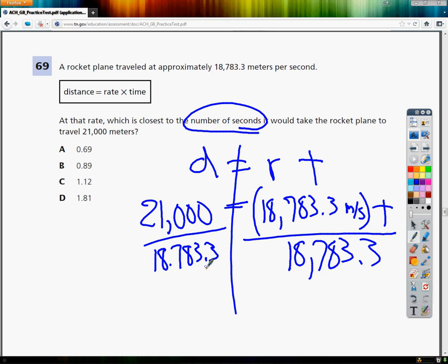21,000 divided by 18,000, and this is supposed to be a comma there, I'm sorry, 783.3, and I hit enter, and I get T is equal to 1 point, mine says 180, so I'm going to round it to the hundredths place and do 1.12 seconds.